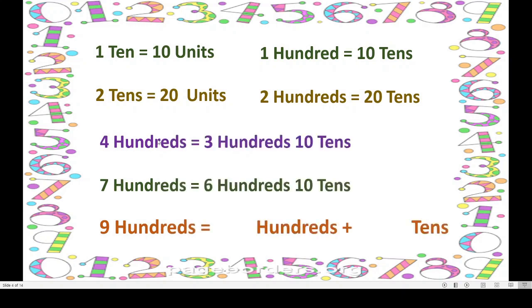Now: 400 is equal to 3 hundreds and 10 tens. 700 is equal to 600 and 10 tens — together they make 700. Now here 900 — you have to fill how many hundreds plus how many tens. The answer is: 9 hundreds equals 8 hundreds and 10 tens. These two together make 900. I hope you understood this about hundreds and tens.